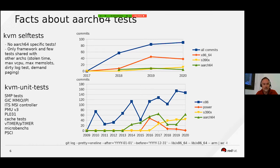We have a few tests which are shared between different architectures — for instance stolen time, max vCPU, max memslot, dirty log tests, and demand paging. Those tests were generally initiated on x86 and were ported to ARM later on.